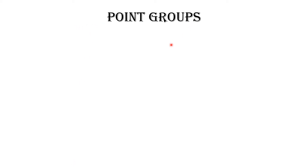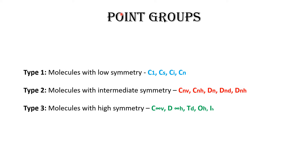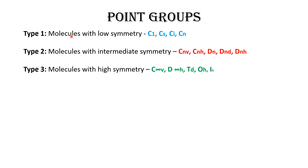Point groups can be segregated into three types. Type 1 is low symmetry, Type 2 is intermediate, and Type 3 is high symmetry — low symmetry, high symmetry, and in between as intermediate.